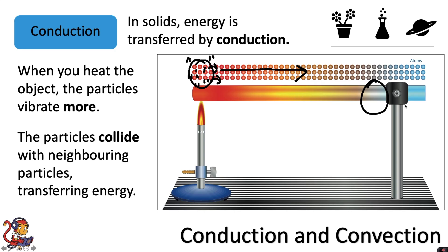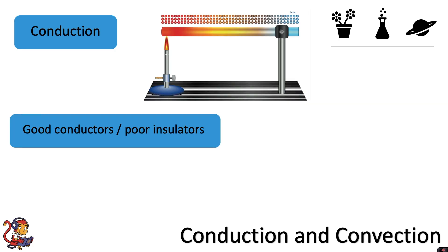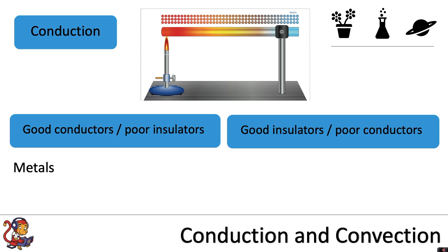Materials can either be classed as conductors or insulators. If you are a good conductor you are a poor insulator and vice versa. Conductors allow heat to be transferred easily whereas insulators do not. All metals are good conductors and therefore poor insulators.